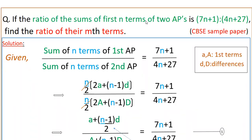Hello everyone. Today I am going to tell the solution of this given problem. If the ratio of the sums of first n terms of two APs is 7n plus 1 to 4n plus 27, find the ratio of their mth terms.